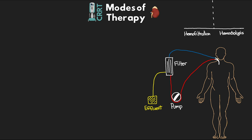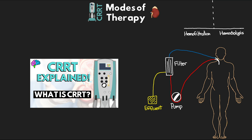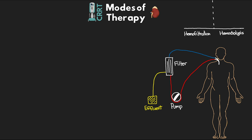As we go through these different modes, I have the basic circuit set up here. As you remember from the second lesson, we have our access line coming off in red, blood going through our blood pump, pushing it through the filter, and then blood exiting via the return line going back to the patient. We also have our effluent line coming off the filter to collect the filtrate or effluent that we pull off in therapy. All modes are going to have these basic components.